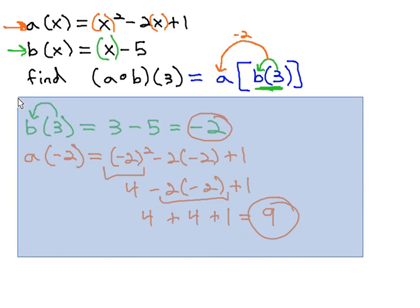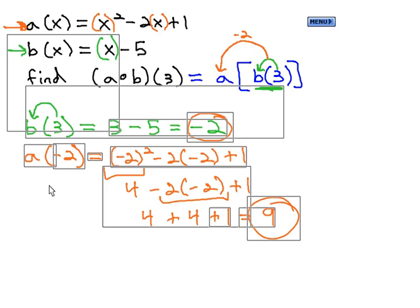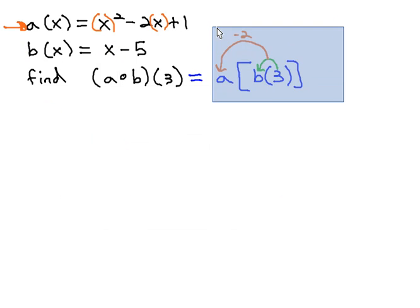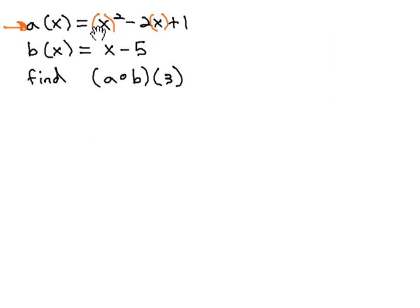It's important to note that the answer we get is not the same if we switch the order of our composition. What I mean is instead of saying a∘b, what if we found b∘a. In other words, now the b function comes first, and with the a(3) inside it. Is the answer still going to be 9? Well, now we plug 3 into the a, and the answer of that into b.